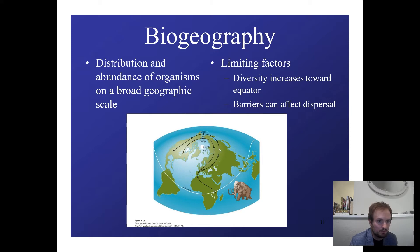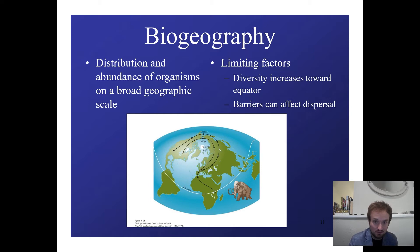Biogeography is how life is distributed on a broad geographic scale. This is limited by how harsh the environment is. Towards the equator you get more diversity, and physical and chemical barriers will affect dispersal. As you get further from the equator, you'll see less diversity naturally.